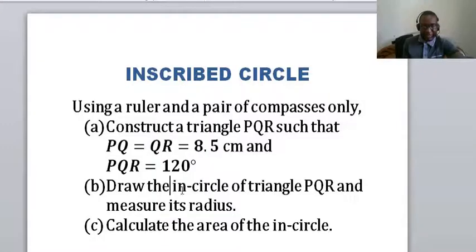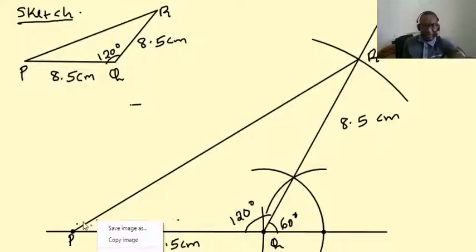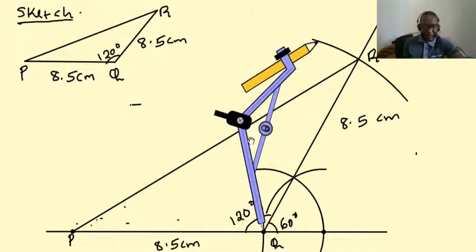Part B says draw the inner circle of the triangle PQR and measure its radius. Now to draw the inner circle, we need to bisect any two angles of our choice. So we are going to choose angle P and angle Q. Let's have our compass back here.